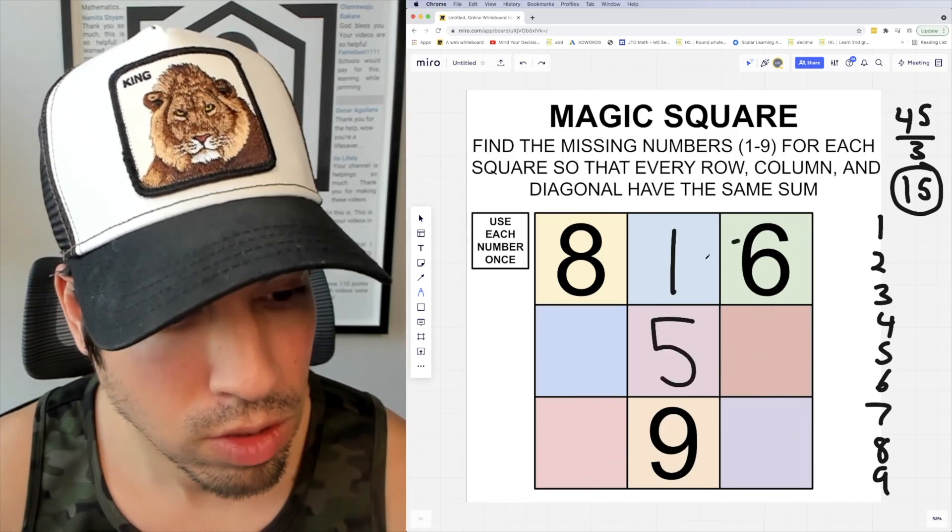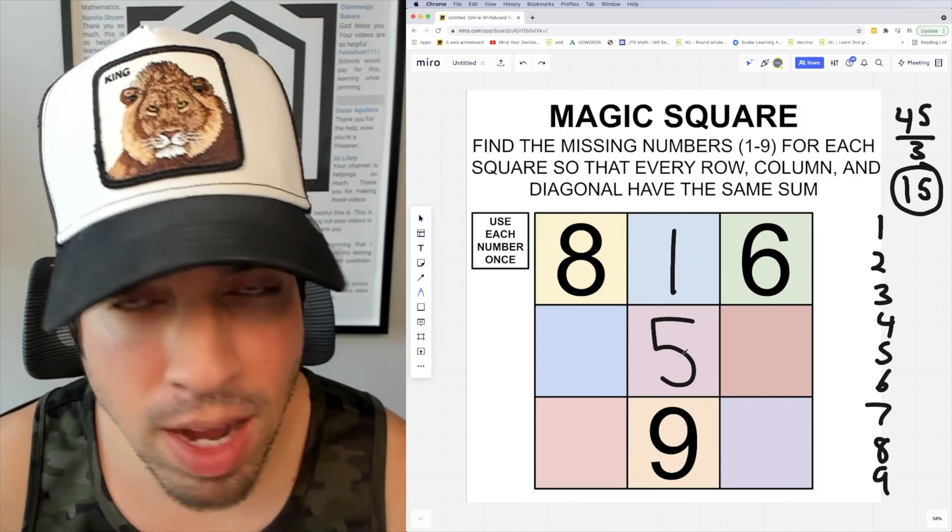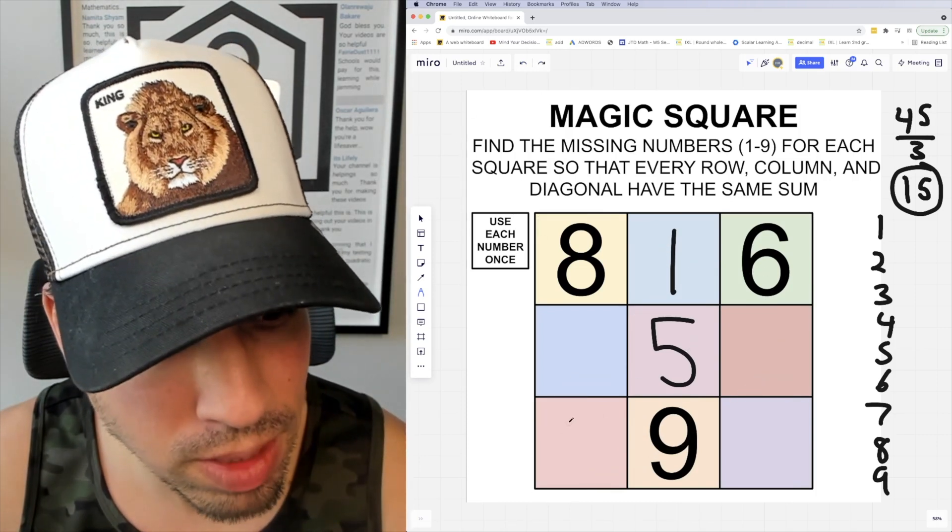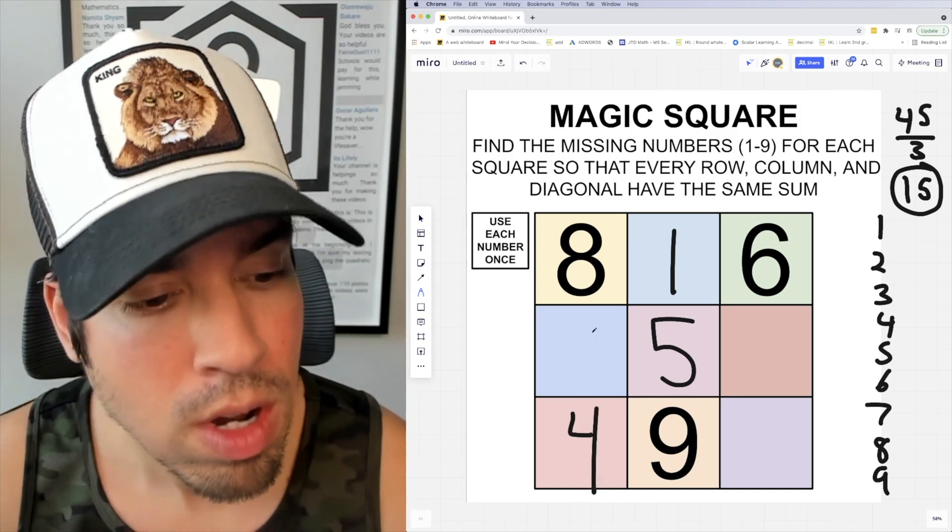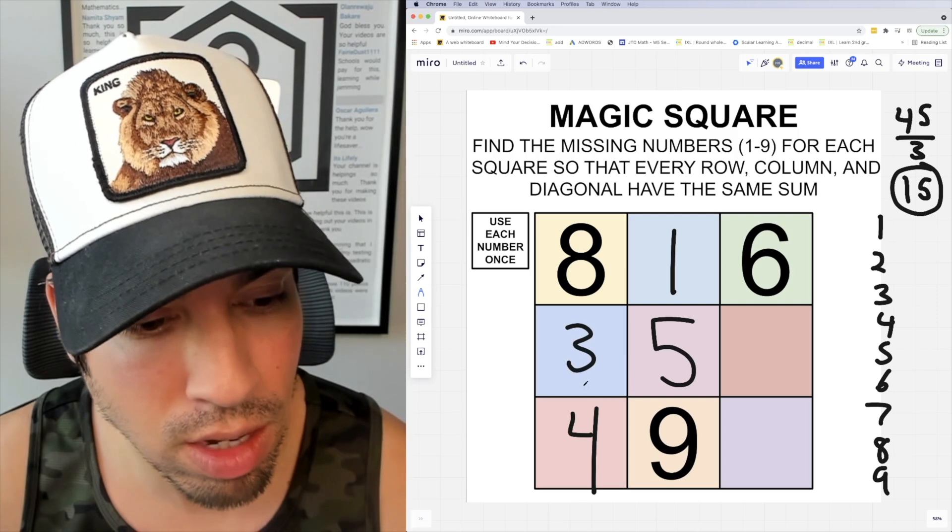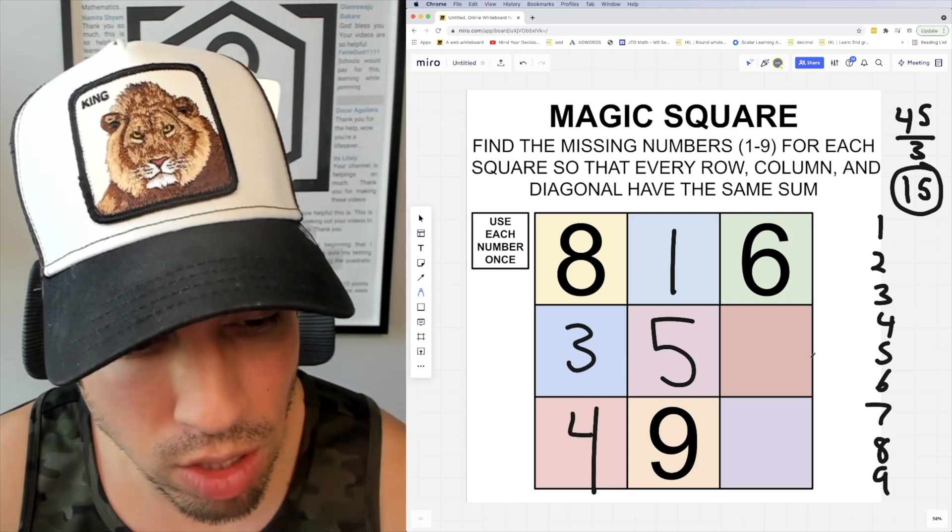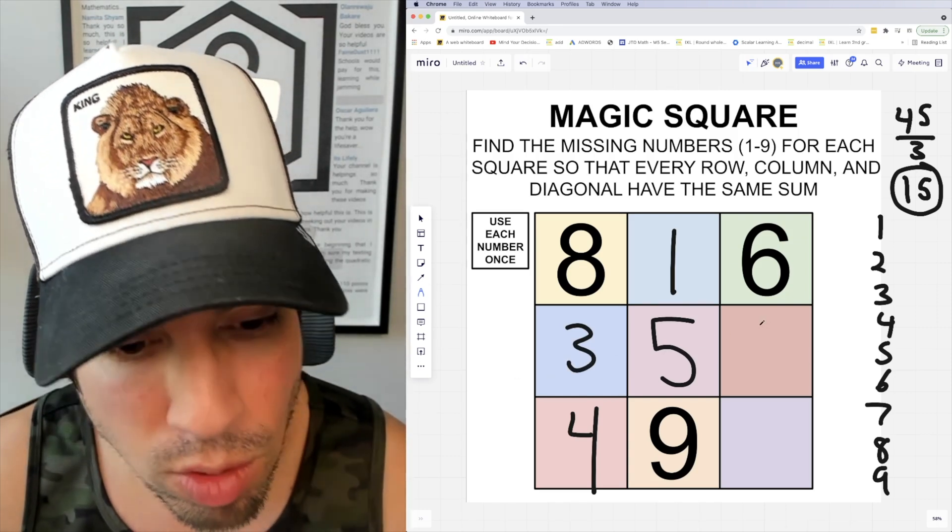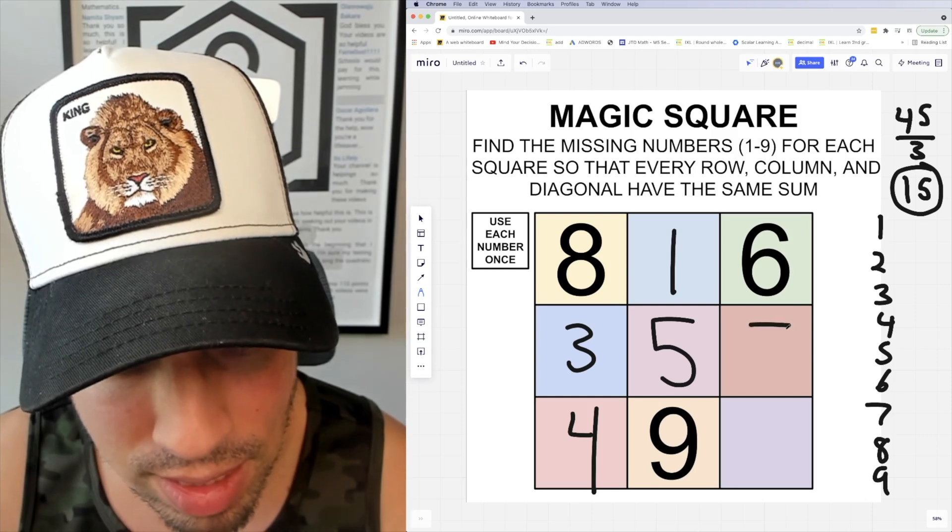Let's go this way. Six plus five is 11, plus what makes 15? That would be four. Then I can go straight up: four and eight make 12, so we're missing a three there. Then I got three plus five going across this way, that's eight. What do I need to make 15? I need a seven.